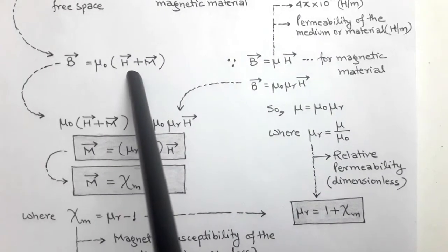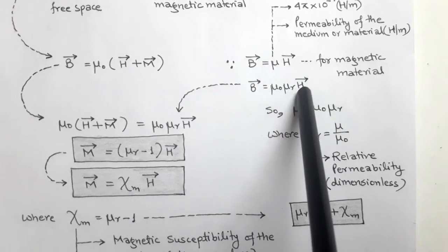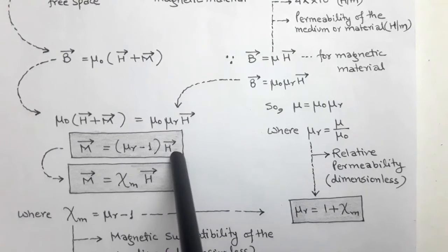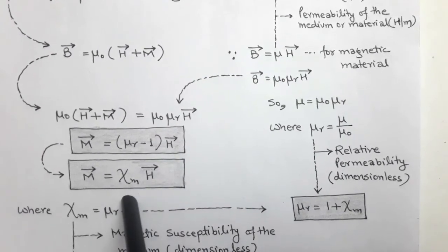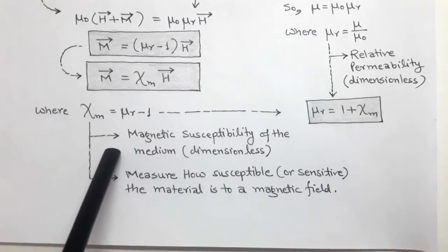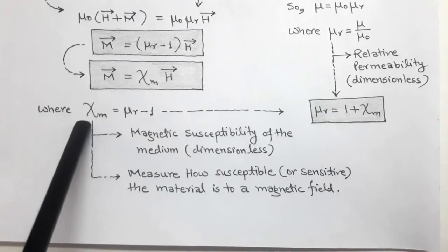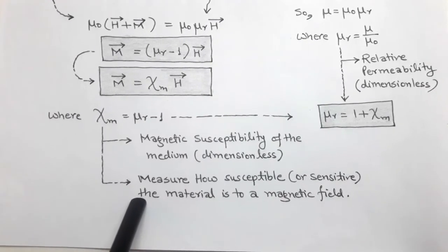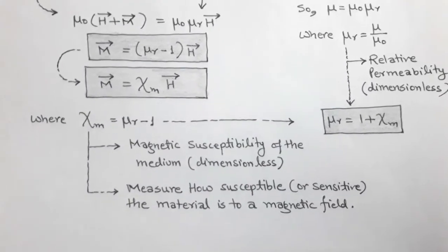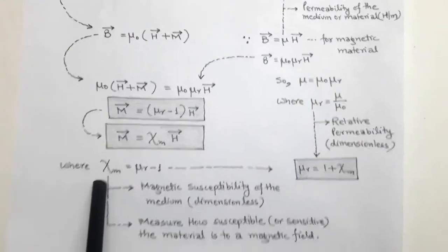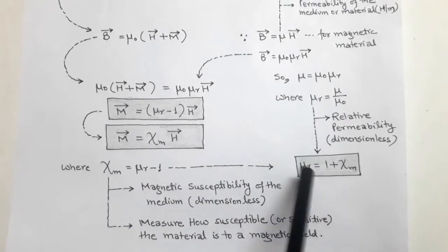From the equation μ₀(H vector plus M vector) equals μ₀·μ_r·H vector, we solve for magnetization M vector. We get M vector equals (μ_r − 1) times H vector, where μ_r − 1 equals χ_m. This χ_m is called the magnetic susceptibility of the material, and it is also a dimensionless value. Magnetic susceptibility χ_m measures how susceptible — how sensitive — the material is to the external magnetic field. When a magnetic material is placed in an external magnetic field, the magnetic flux density is increased due to magnetization, and this magnetization is represented in terms of magnetic susceptibility χ_m, where χ_m equals μ_r − 1.